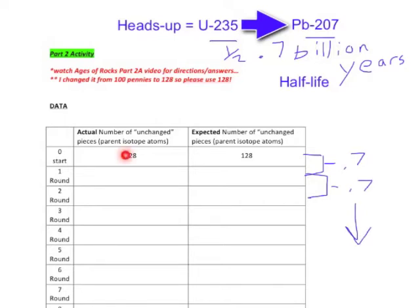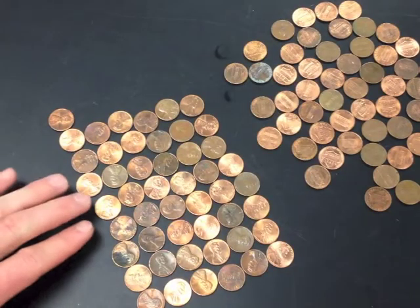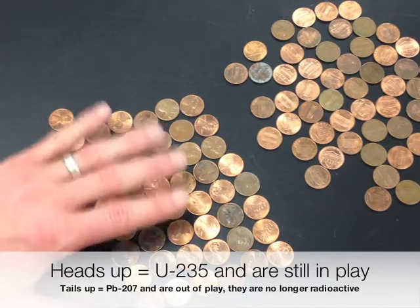After you've started with 128 pennies, shook them in the container, and counted them, what you're going to record is the number of heads still remaining. Out of 128 to start, record your actual data. Let's say you had 70 heads remaining after the first round. The expected number would be half of 128, which is 64. The heads-up pennies are the actual number of unchanged pieces, or the parent isotope — still considered uranium atoms.